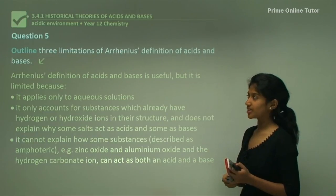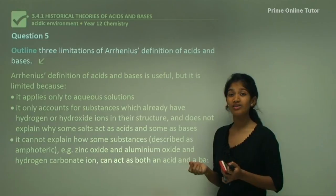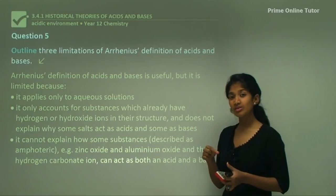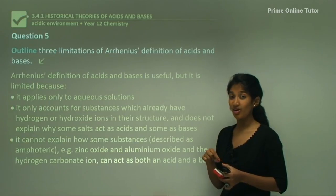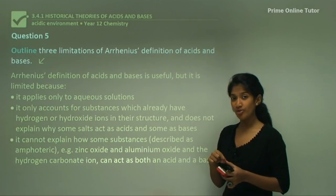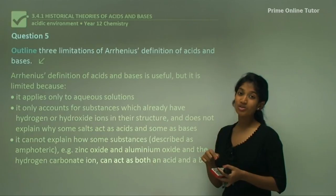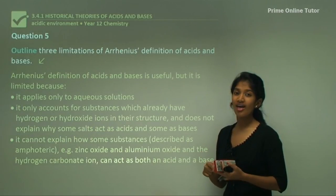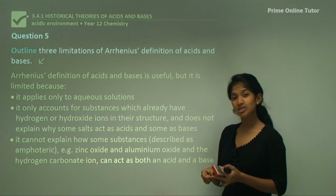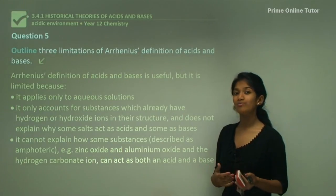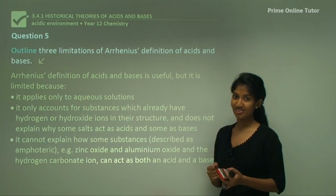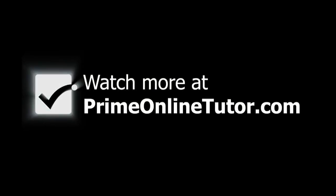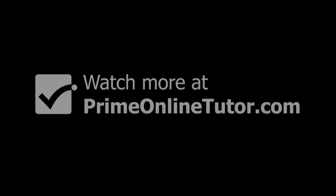In conclusion, today we covered the historical theories of acids and bases. We first looked at Lavoisier's theory where oxygen is a component of acids, then Davy who said all acids contain hydrogen, and lastly Arrhenius who said acids produce hydrogen ions and bases produce hydroxide ions.